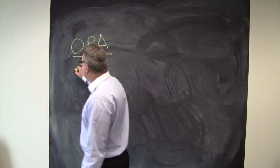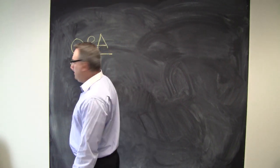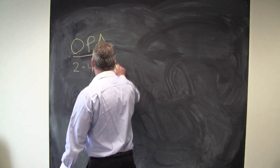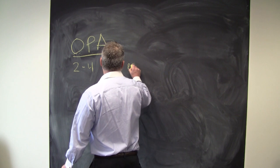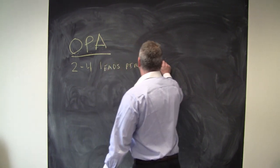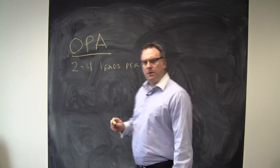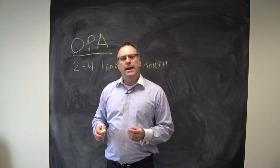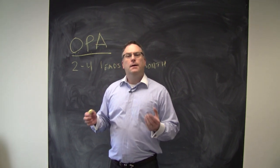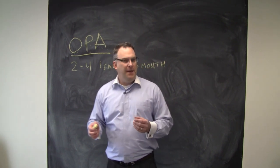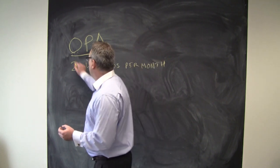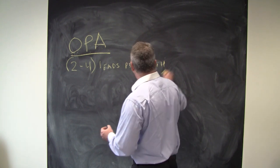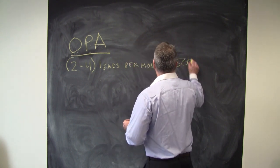So outcome is, let's just say, two to four additional leads per month. Two to four additional leads per month. What does that mean? This particular company happened to be an electrician. I won't name names, but what is this worth? What's an average job worth? Let's just say five hundred dollars.